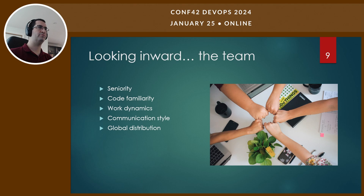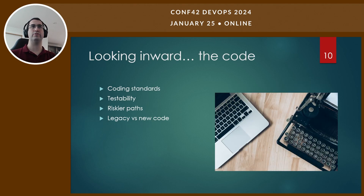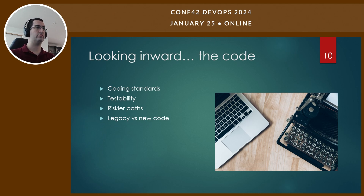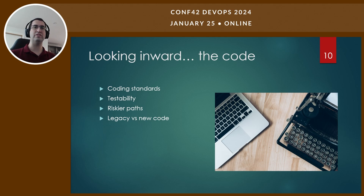Second, we need to look at the code itself. What are the coding standards? What's the testability of what we already have? What are the riskier paths in the code — maybe you work in a bank and there's a core banking feature that can't break in any way. Also, maybe you're working on legacy code or a completely new project. These things do change the dynamics of code reviews in many ways.